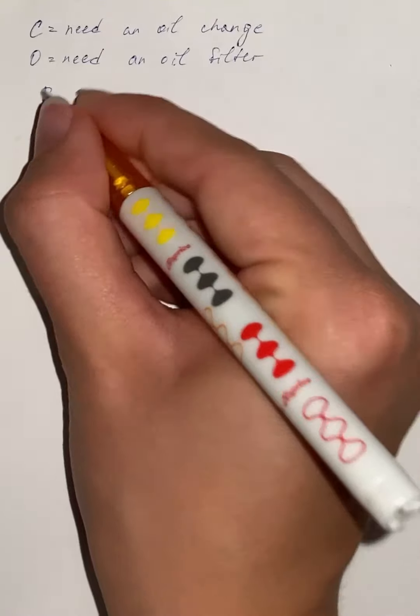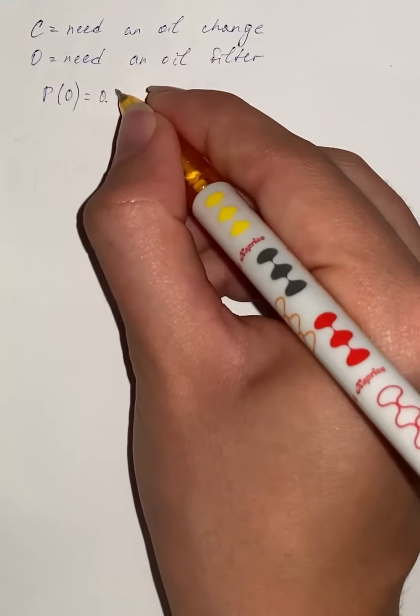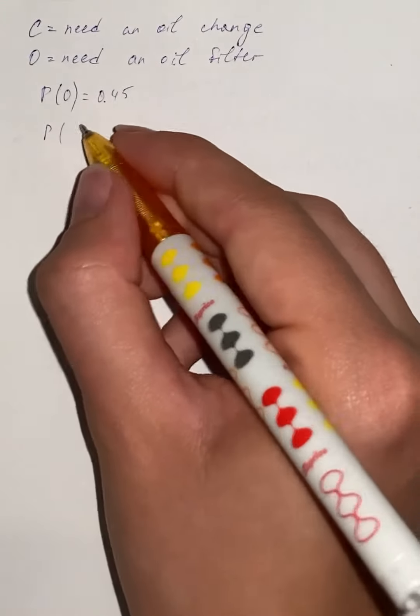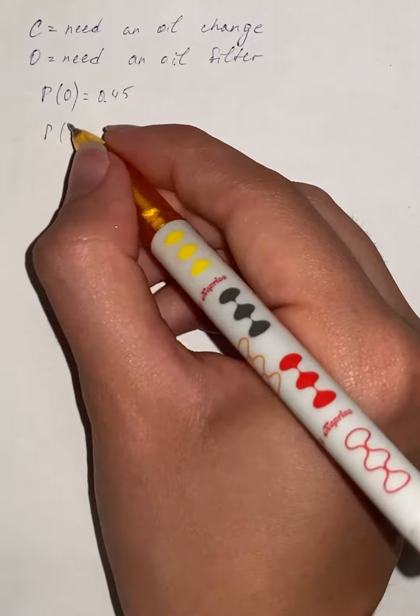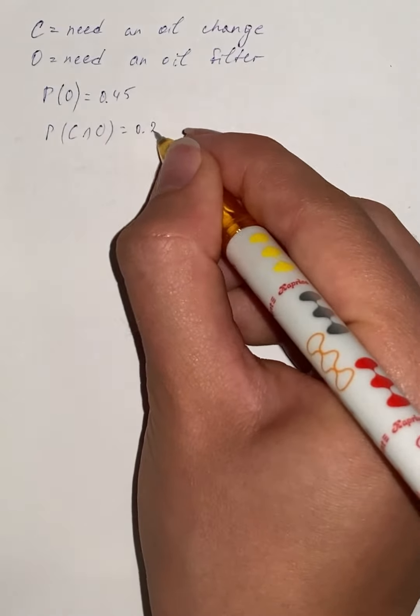So we were given that the probability of O is 0.45 and the probability that both of them are needed is 0.2.